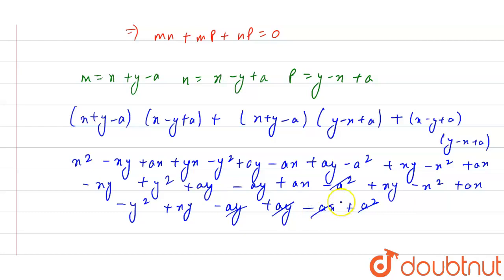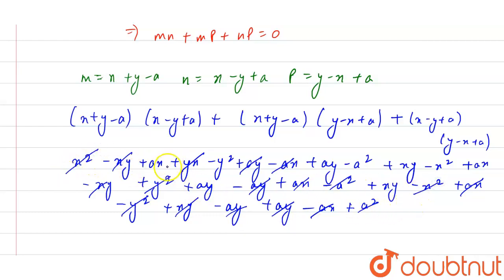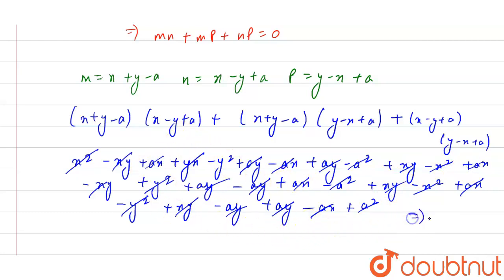Now the terms cancel out: plus a² cancels with minus a², minus ay and plus ay cancel, minus ax and plus ax cancel, and the various plus and minus xy terms cancel. Similarly, minus y² and plus x² terms cancel, leaving us with zero. So we are left with the result that equals zero.